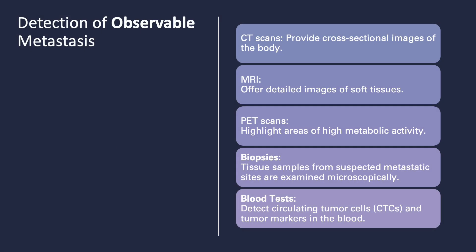Detecting observable metastasis involves several diagnostic tools. CT scans provide cross-sectional images of the body, revealing the location and size of tumors. MRIs offer detailed images of soft tissues, crucial for spotting abnormalities. PET scans highlight areas of high metabolic activity, often indicative of cancer. Biopsies involve examining tissue samples from suspected metastatic sites under a microscope. Blood tests can detect circulating tumor cells and tumor markers, offering less invasive ways to monitor cancer spread. Each of these methods plays a vital role in accurately diagnosing and managing metastatic cancer.